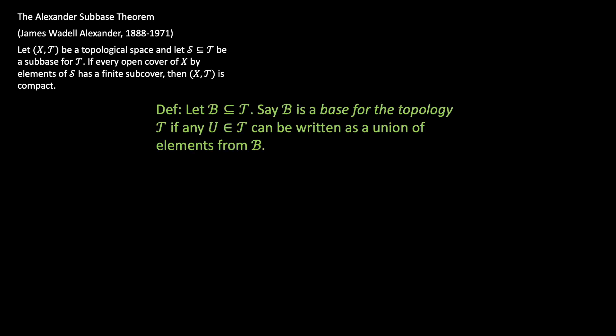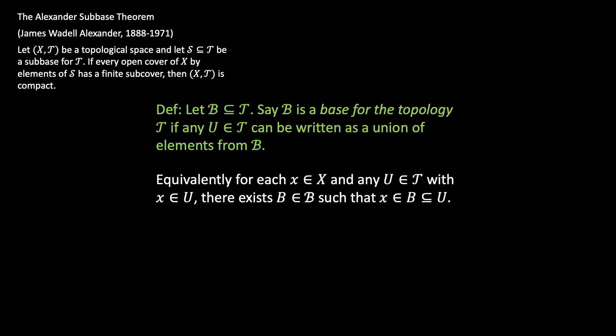We're going to start off with the definition of a base for a topology. We'll say that a subset B of the topology is a base for the topology if, for any open set U in the topology, you could write it as a union of elements from B. Equivalently, for each element x in my space and any open set U in the topology that contains x, we should be able to find a set B in the base such that x is in B and B is wholly contained in U.